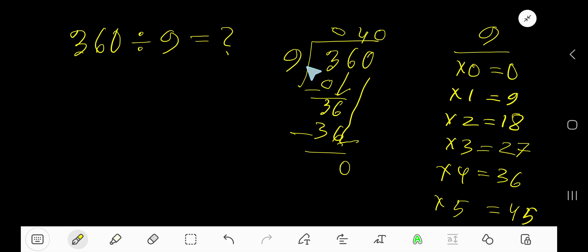0 times 9 is 0. Subtract, 0. So the answer is 40.